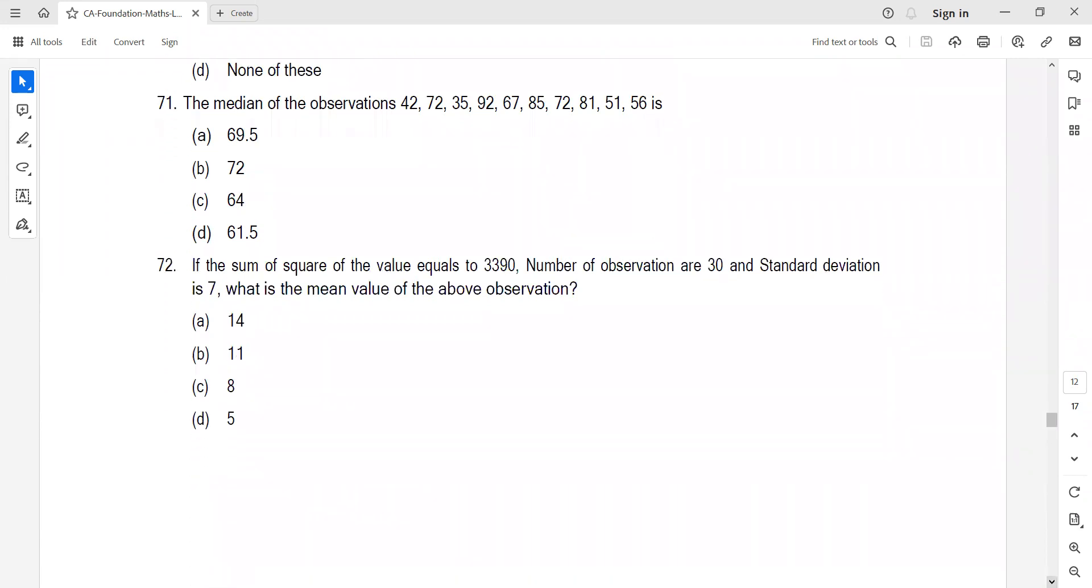The median value of observations. First check how many observations are given: 10 observations, so it's even. For even numbers, we take the middle two observations, add them and divide by 2. But first convert to ascending order: 35, 42, 51, 56, 67, 72, 72, 81, 85, 92. The two middle observations are 67 and 72. 67 plus 72 divided by 2 is 69.5. Answer is A.